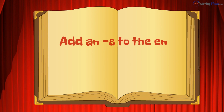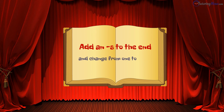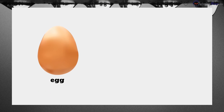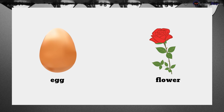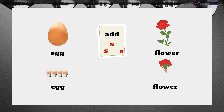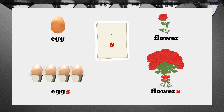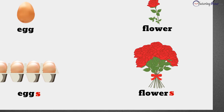Add an S to the end and change from one to many. Let's try that on these things: an egg and a flower. Let's add the S. We have a carton of eggs and a bouquet of flowers.